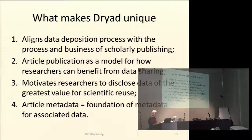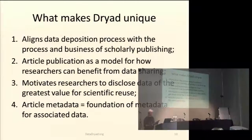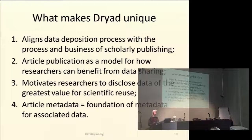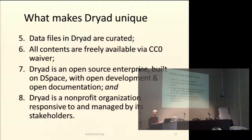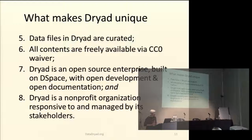What makes Dryad unique? It's the close association of data deposition with the process and business of scholarly publishing, and using article publishing as a model for how researchers can benefit from data sharing. The article metadata becomes the foundation of the metadata for the associated data. Data files in Dryad are curated — by real-life librarians and information science students at the University of North Carolina in Chapel Hill. Dryad is also an open data, open source, and open organization, and a nonprofit.